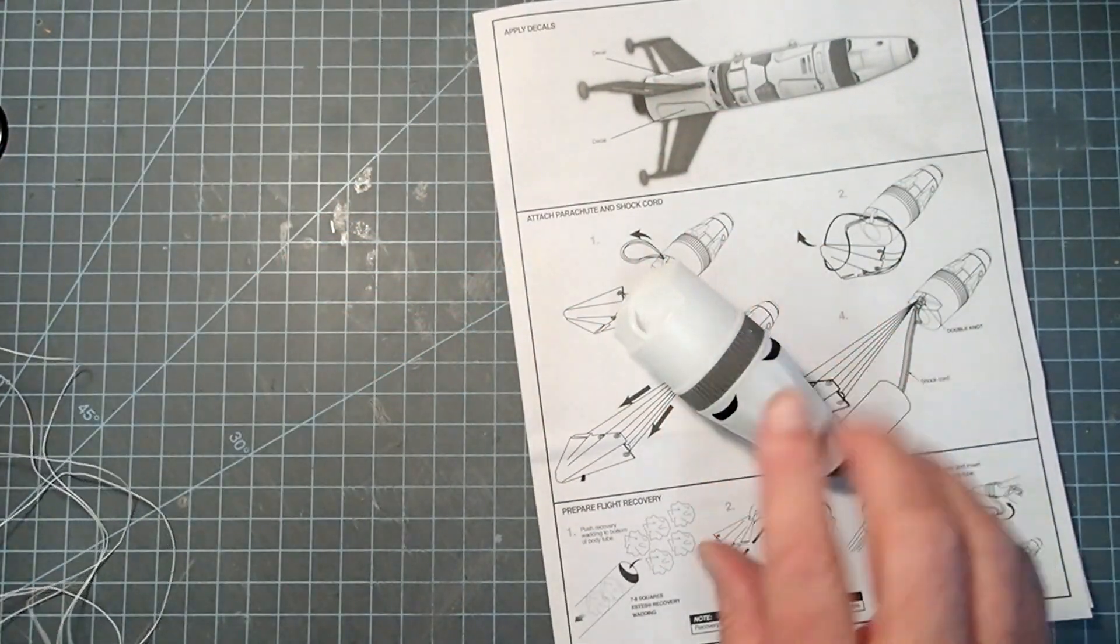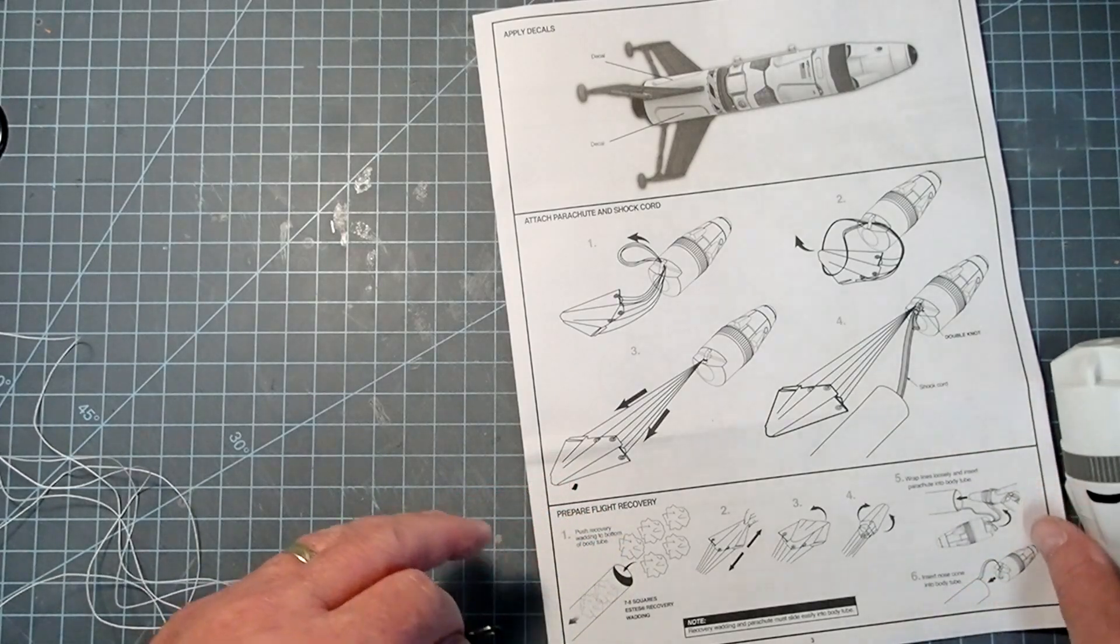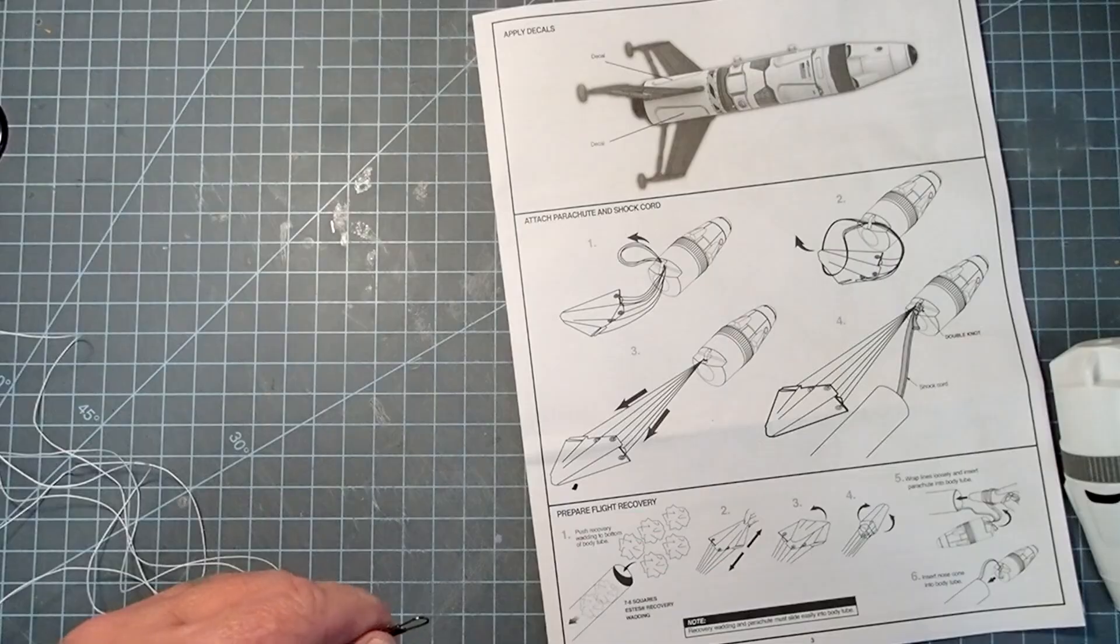Now I'm going to wait on attaching the shock cord, which they'll show here in just a minute, until after I attach the fin can to the rocket body tube itself.